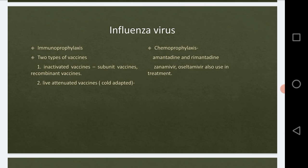In immunoprophylaxis we have two types of vaccines: inactivated vaccines and live attenuated vaccines. Inactivated vaccines consist of viruses grown in the allantoic cavity of eggs and inactivated with formalin. The viruses are grown and inactivated so that unless the influenza virus comes, the vaccine will not get activated. These are called inactivated vaccines, and subunit vaccines are also available.